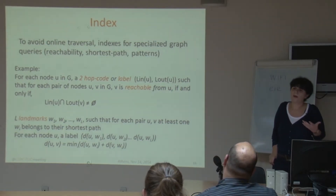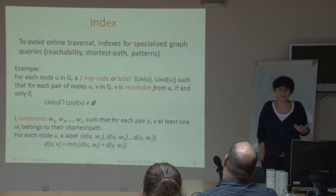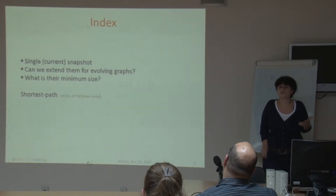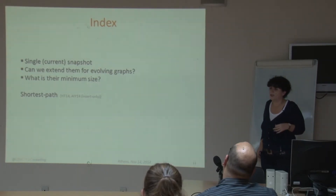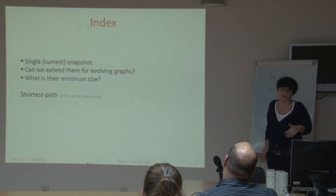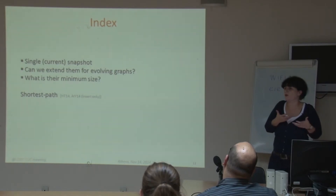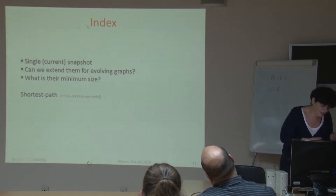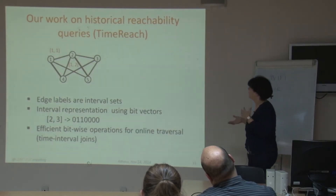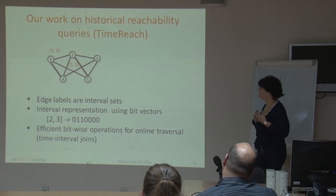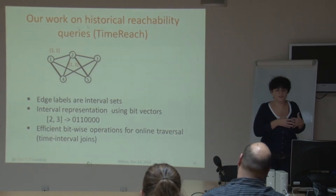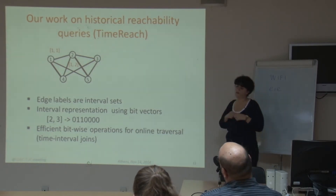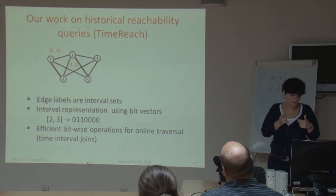All these indexes are applicable for one snapshot. Can we extend them? Is it possible to propose different indexes for evolving graphs? What is a good selection of landmark nodes or nodes for the two-hop index in the case of evolving graphs? Intuitively, you want to select nodes that cover many other nodes in many snapshots, not just one. We have also looked into reachability queries, using an approach based on versioning with edge labels that are interval sets, using bit vectors for faster traversal via bitwise intersection operations.